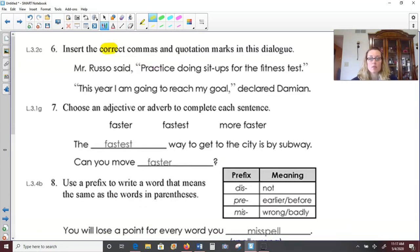Over to the next page, number six. We need to insert correct commas and quotation marks in our dialogue to show that people are talking. Mr. Russo said, practice doing sit-ups for the fitness test. Well, we need a comma after said to separate our speaker from their words. And then quotation marks around the exact words of Mr. Russo. Practice doing sit-ups for the fitness test. This year I'm going to reach my goal, declared Damian. Well, Damian is saying, this year I'm going to reach my goal. So quotation marks around his words. And a comma after goal inside of the quotation marks to show the separation between the words and our speaker.